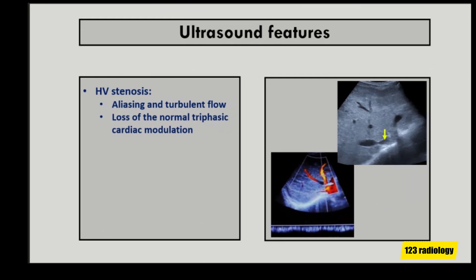Hepatic vein stenosis is less common than thrombosis. Like thrombosis, stenosis can involve one or several hepatic veins. It may be focal or diffuse, partial or complete, and most commonly affects the osteal segments of hepatic veins.